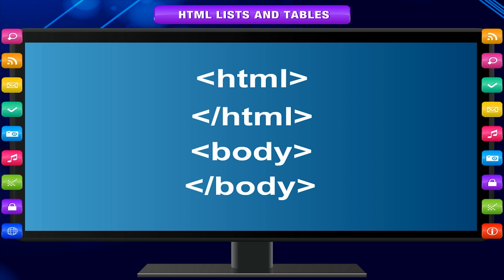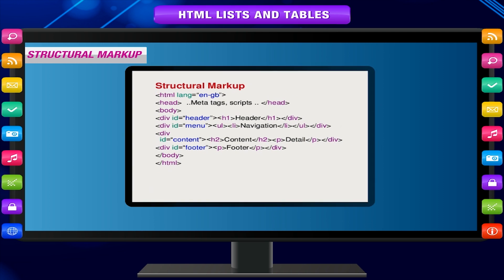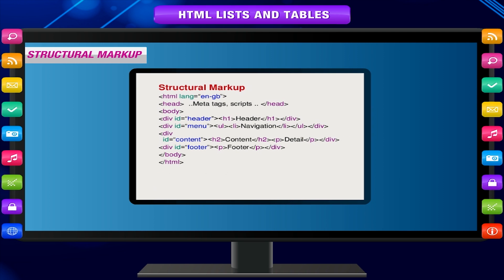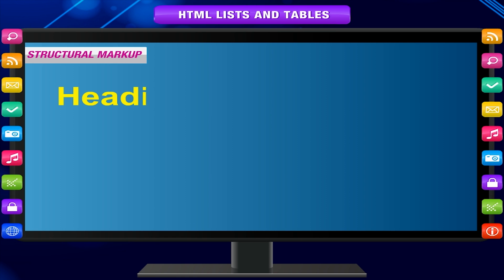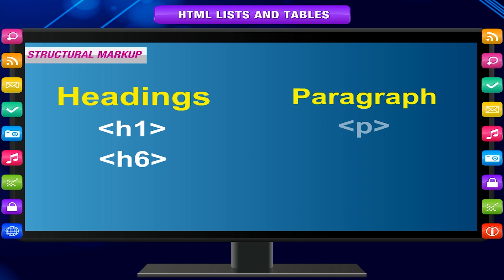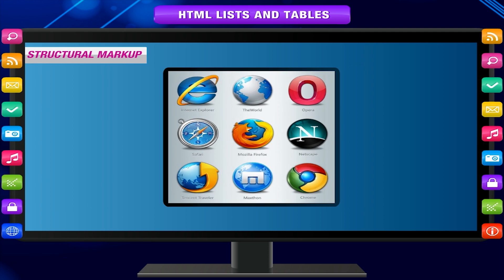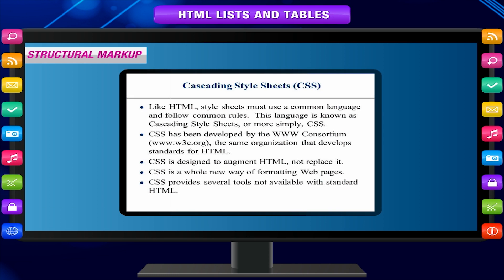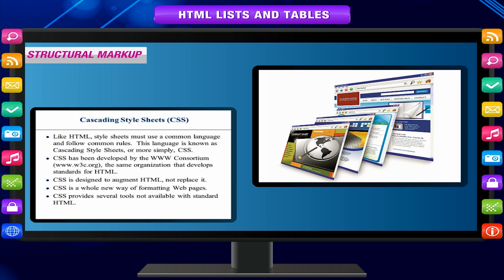There are several types of tags or elements in HTML. Structural markup tags describe the purpose of the text. These consist of headings h1 to h6 and paragraph p tags. Most browsers display these in a default style, but we can use Cascading Style Sheets or CSS to style the contents of a webpage. Sometimes the style attribute is also used in tags to format the HTML document.